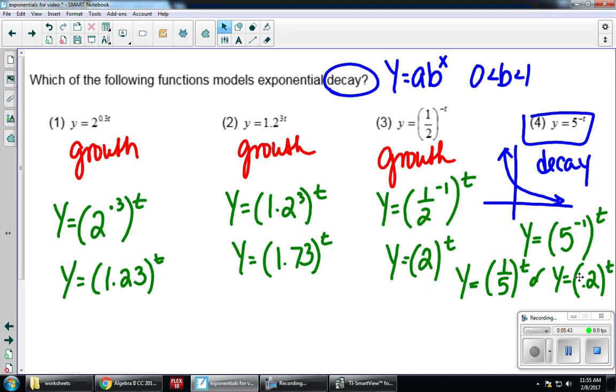So that's the difference between growth and decay. Growth or increasing functions, decay or decreasing functions. As long as you're in ab to the x form, growth b is bigger than 1. Decay b is between 0 and 1, but once again you have to be in that form ab to the x power.